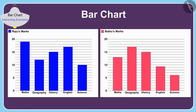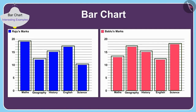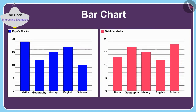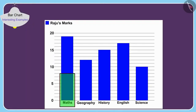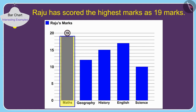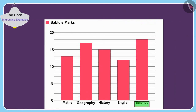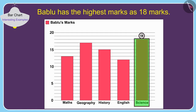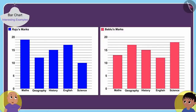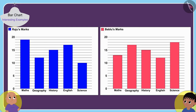Raju and Babalu made bar charts of the marks they scored. Children, by looking at the bar charts of Raju and Babalu, can you tell which subjects they each got the highest marks in? The highest rectangle in Babalu's chart shows 19 marks, and the highest rectangle in Babalu's chart shows 18 marks. Look, Raju — I have got 5 marks more than you in this subject. And in this subject, you have got 5 marks more than me.